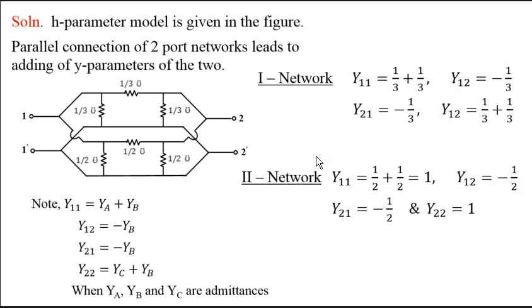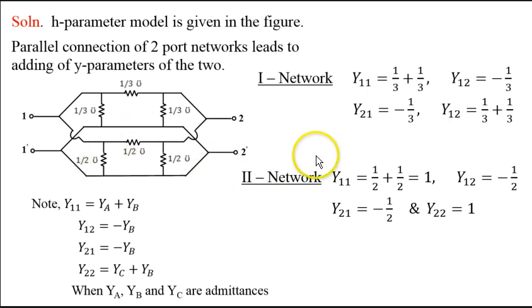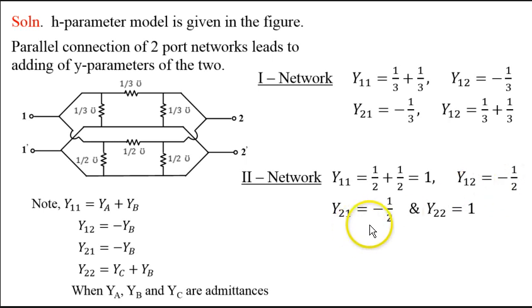For the second network, again we can find the Y parameters. Y11 is 1/2 plus 1/2, Y12 is minus 1/2, Y21 is minus 1/2, and Y22 is 1.